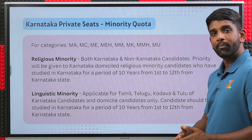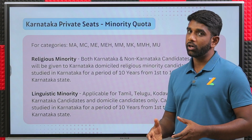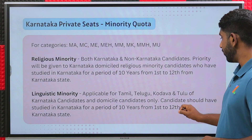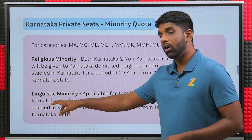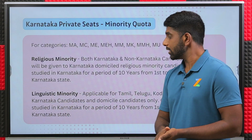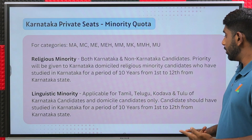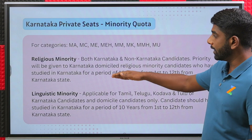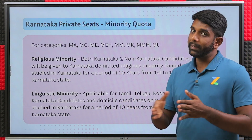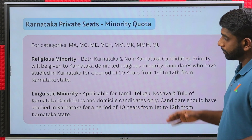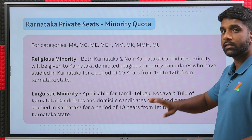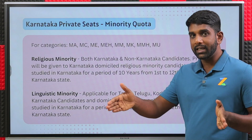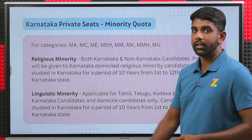The second type of minority is linguistic minority, which is based on language. Candidates of Tamil, Telugu, Kodawa, and Tulu whose mother tongue is one of these languages and who are domiciled in Karnataka are eligible. They should have studied in Karnataka for a period of 10 years from class 1st to 12th. Only if a candidate is Karnataka domiciled and has studied in Karnataka for 10 years within that period will they be eligible under the linguistic minority.